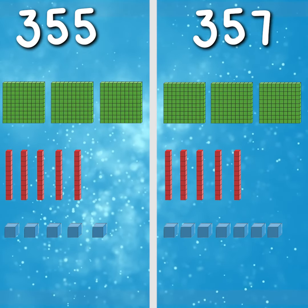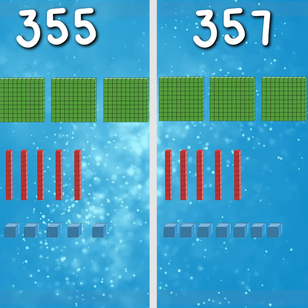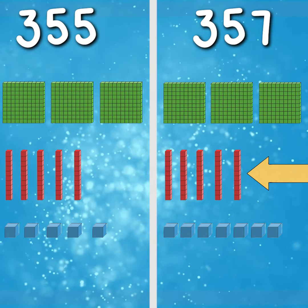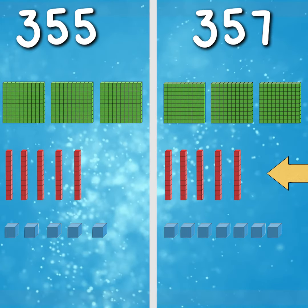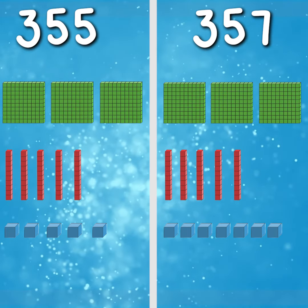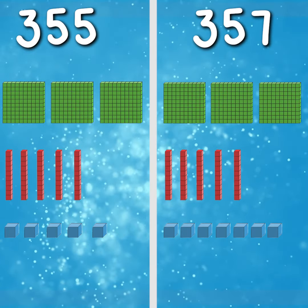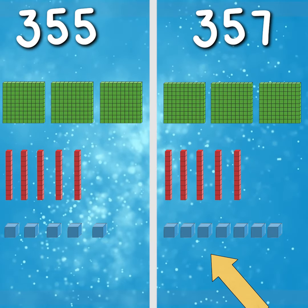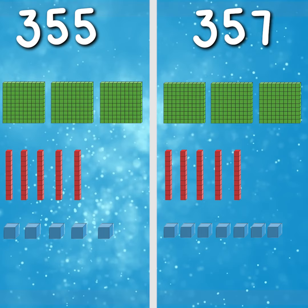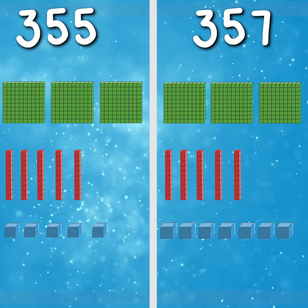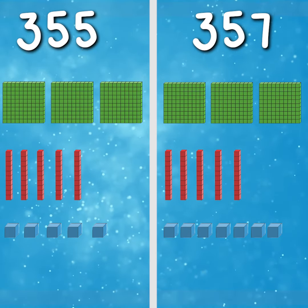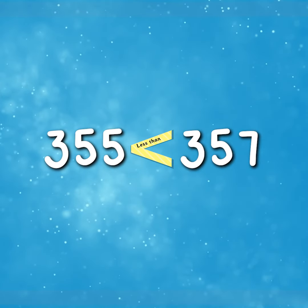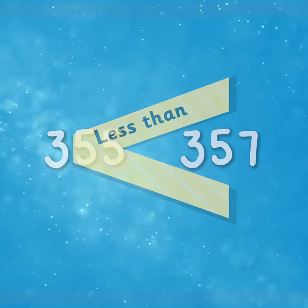Looking at the base 10, we can see that both of our numbers have the same amount of hundreds. So therefore, we need to look to the base 10 that has the next highest value, which is the tens. We can see both of our numbers have the same number of tens. So again, we look to the base 10 with the next highest value, which is the ones. 355 has five ones and 357 has seven ones. Therefore, 355 is less than 357. We use the less than sign to show this.